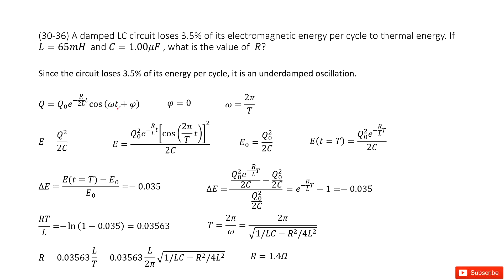We have a damped LC circuit. It tells us it loses energy 3.5% per cycle. The given quantities are L and C.